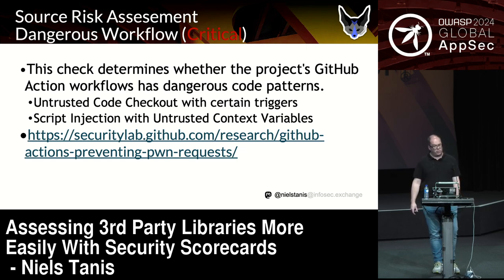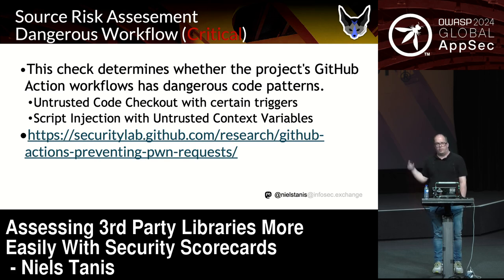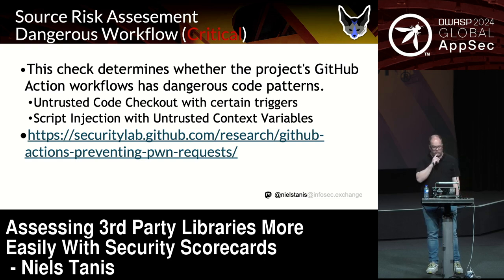Dangerous workflows are marked as critical — the highest weighting in the whole scoring. There are certain bad practices with GitHub Actions, and there's a real good blog they wrote themselves. A good example was something that happened with VS Code two years ago — somebody figured out that filing an issue with a pull request included would get run in a nightly task, and the person was able to add additional files to the output of the code version generated. It was properly disclosed, probably earned money, but it was due to issue input being used inside build actions.